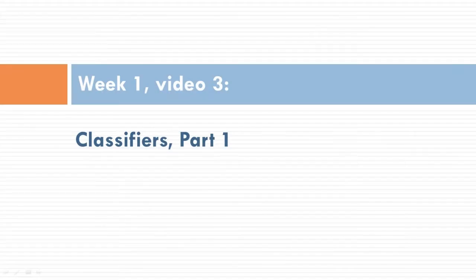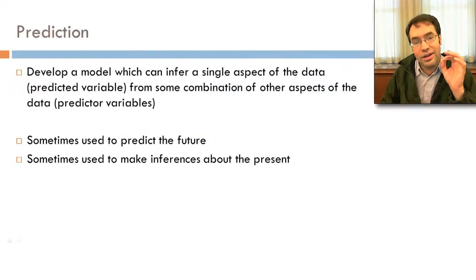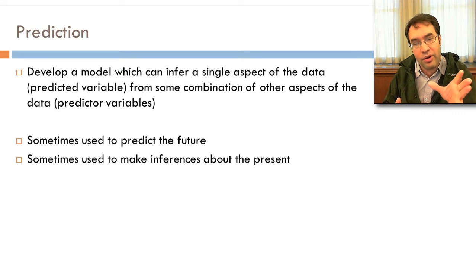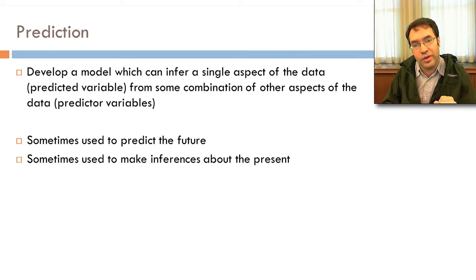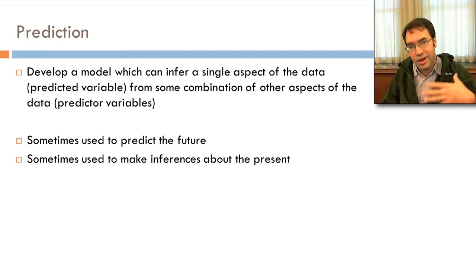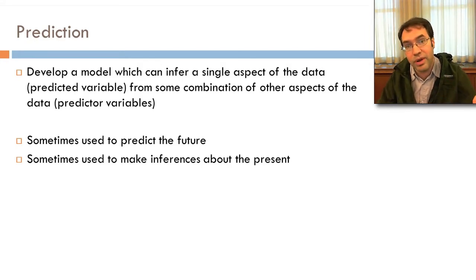Today we're going to start our discussion of classifiers. You may remember from previous classes that in prediction, we developed a model which can infer a single aspect of the data — the predictive variable — from some combination of other aspects of the data, the predictor variables. We sometimes use this to predict the future, and we sometimes use it to make inferences about the present.